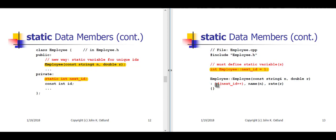Notice how we've modified our constructor to make use of this nextID variable. Instead of initializing the ID data member with an argument passed into the employee constructor, we initialize the ID data member from the nextID static data member and post-increment nextID after using its original value as the ID for the current employee object. Consequently, each time this constructor gets called, it initializes the ID to the next available ID and then increments nextID so that the next employee created will be guaranteed to have a unique ID.